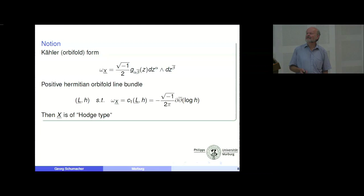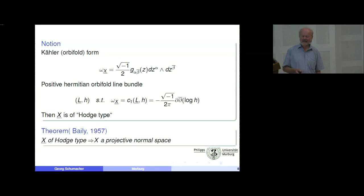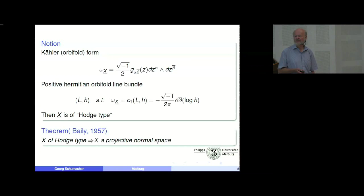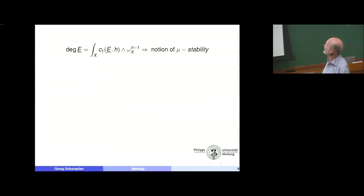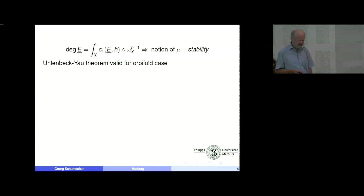In this case, we say that the orbifold is of Hodge type. The classical theorem of Bailey says that invariant sections of such a line bundle, or powers thereof, give rise to an embedding into projective space, so the underlying space is a projective normal space. Once we are that far, we can write down the degree of a holomorphic vector bundle, we have the notion of stability, and we can look at the Uhlenbeck-Yau theorem.